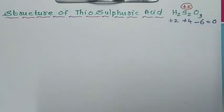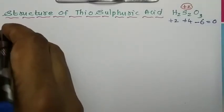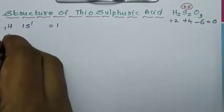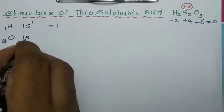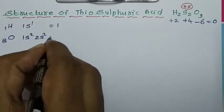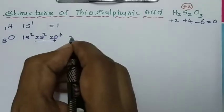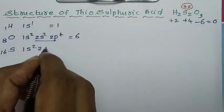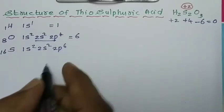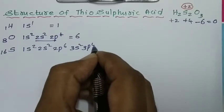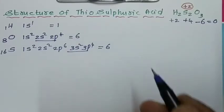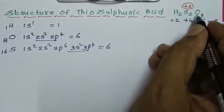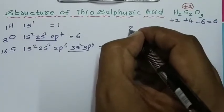The oxidation state of sulfur is plus 2. What elements are present? Hydrogen has atomic number 1, electronic configuration 1s1 — there is only one valence electron in hydrogen. Oxygen has atomic number 8, electronic configuration 1s2, 2s2, 2p4. For sulfur also, the electronic configuration is 1s2, 3s2, 3p4, and the total number of valence electrons equals 6.